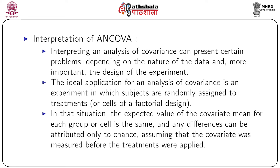Interpreting an analysis of covariance can present certain problems. Depending on the nature of the data and the design of the experiment, results are interpreted accordingly. The ideal application is an experiment in which subjects are randomly assigned to treatments or cells of a factorial design. Although in reality it is not always possible to have completely randomly assigned subjects, we try to maintain randomness as much as possible.